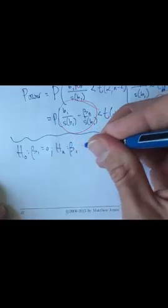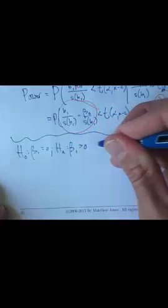In a problem you'll need a good estimate for the standard error s(b₁), and you can just substitute that number in and compute this. We'll do an example in a minute. What if you have a right-tailed test? What if H₀ is β₁ = 0 and Hₐ is β₁ > 0?